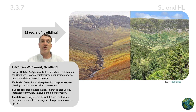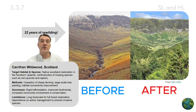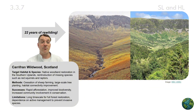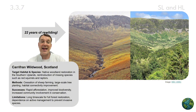Carrifran Wildwood in Scotland focuses on native woodland restoration in the southern uplands and the reintroduction of missing species such as red squirrels and raptors. Methods include cessation of sheep farming, large-scale tree planting, and habitat connectivity improvement. Before and after images show 22 years of progress through rewilding. Successes include rapid afforestation, improved biodiversity, and increased community involvement in conservation. Limitations include the long timescale for full forest restoration and dependence on active management to prevent invasive species.